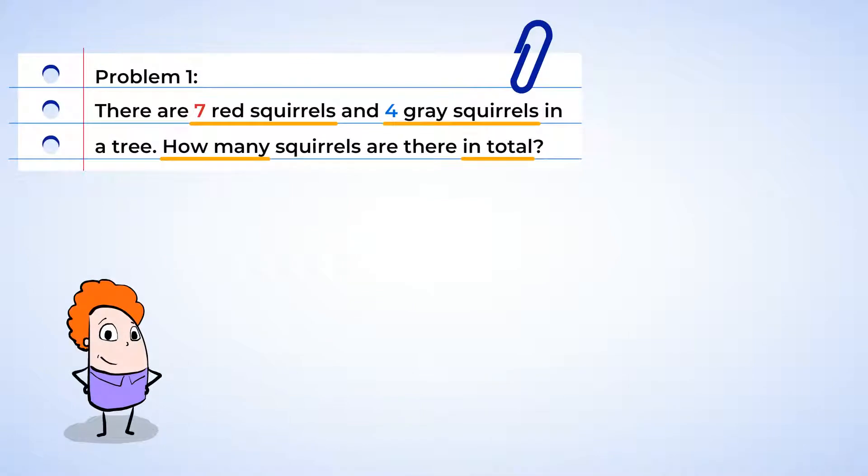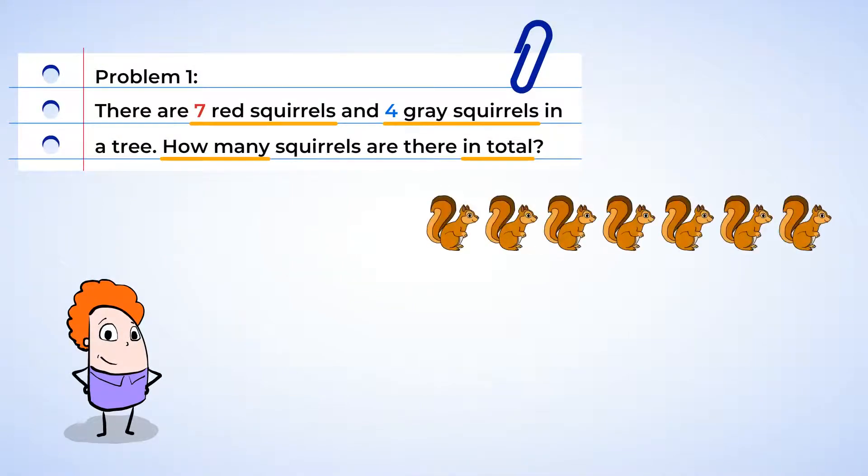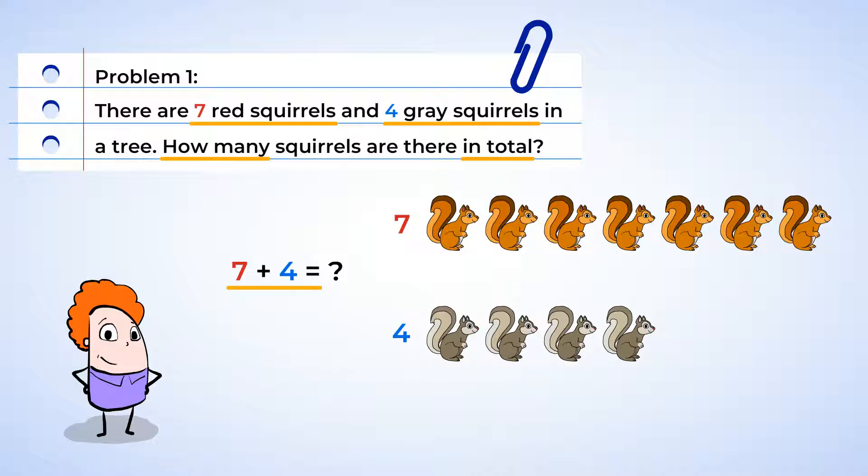Let's look at the squirrels and make an addition sentence about them. We know two of the numbers already, seven and four. And because we want to know how many there are in total, we need a plus sign to show we're adding them together, seven plus four. Now, we need an equal sign and one more number to complete the addition sentence. Seven plus four equals? If we don't know what the third number is yet, we can write a question mark in its place. Now our addition sentence looks like this, seven plus four equals question mark.